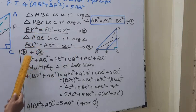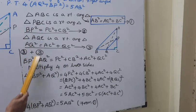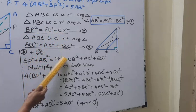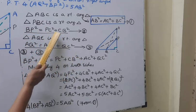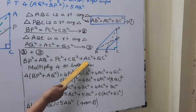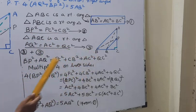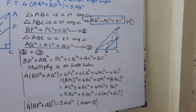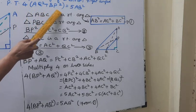Left hand side: BP square plus AQ square. Right hand side: PC square plus BC square, plus AC square plus QC square.